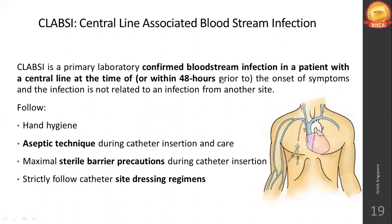Strictly follow the catheter site dressing regimens. Use a sterile gauze piece or transparent semi-permeable dressing to cover the catheter site. The area touching the patient's wound must be sterile. In CLABSI, it is the central line catheter. Make sure you are using a semi-permeable dressing to cover the area where the catheter is placed.